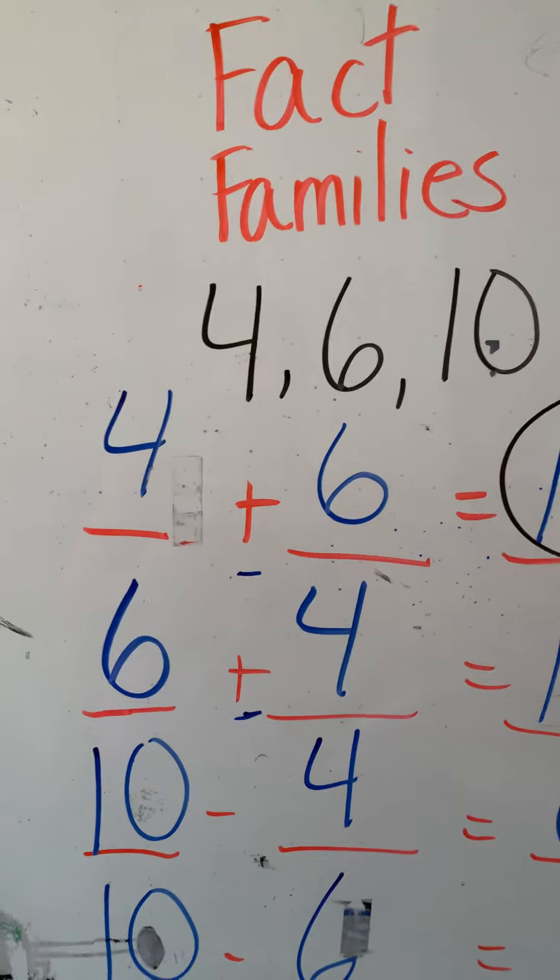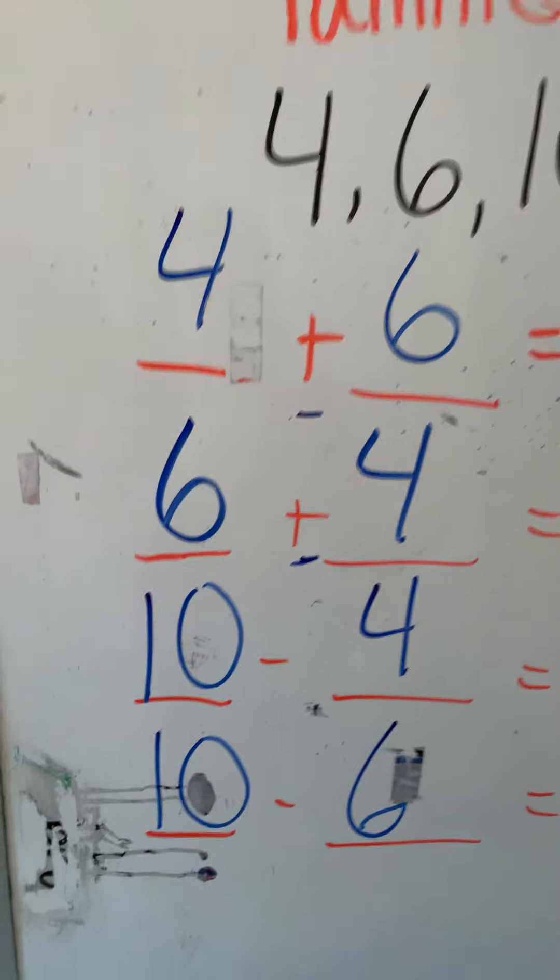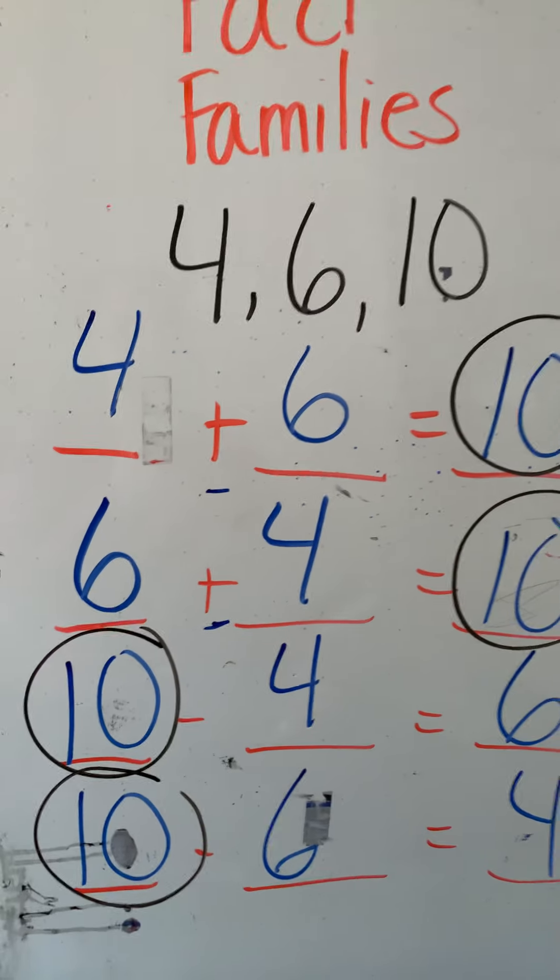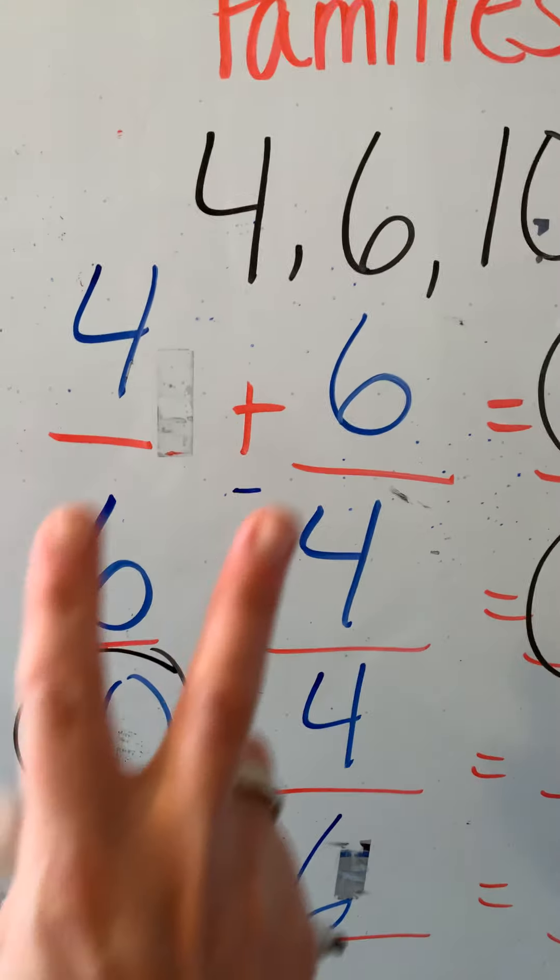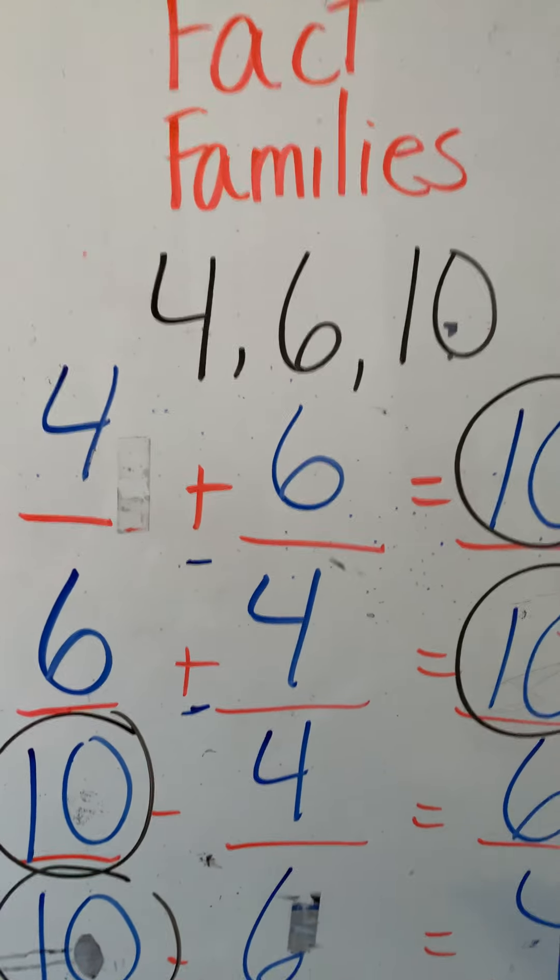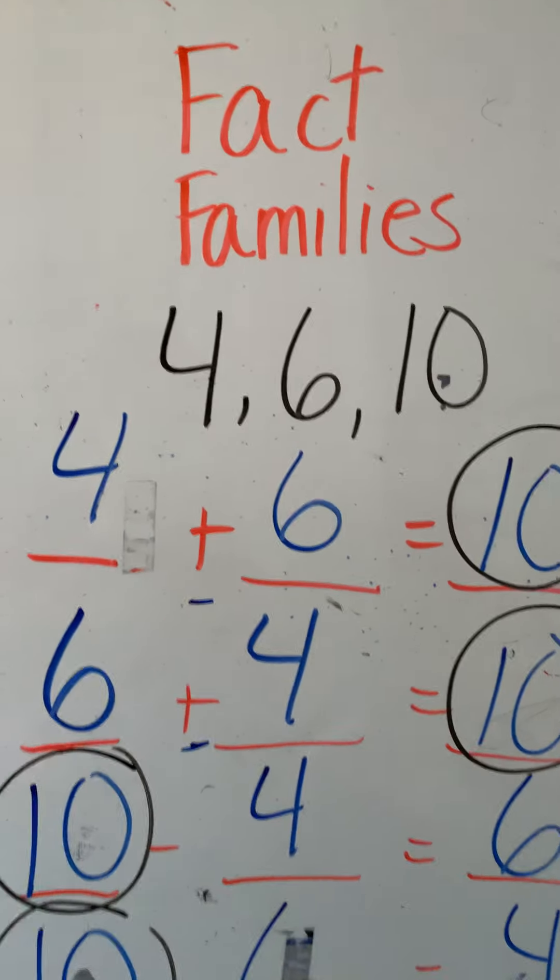So I think your biggest keys to make sure you're going to do okay is the addition ends with the biggest number. Subtraction starts always, always, always with the biggest number. And make sure you are flipping your facts. You can't write 4 plus 6 is 10, 4 plus 6 is 10. You have to make sure you flip, flip, flip.